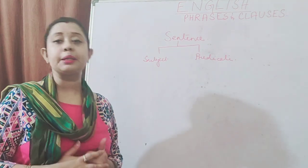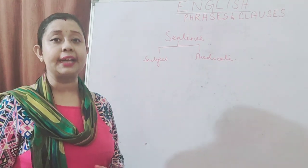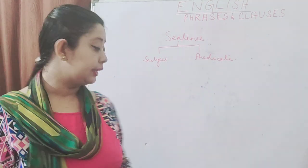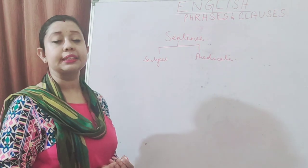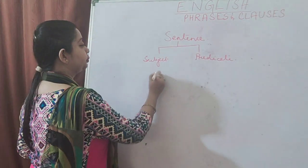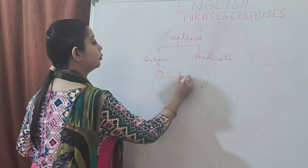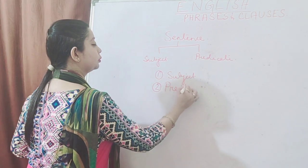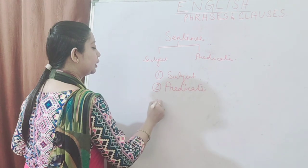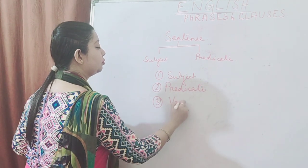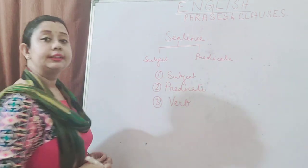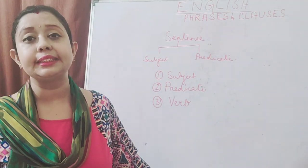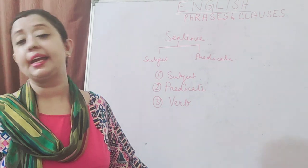Now the next important thing you need to understand is that there are three important things without which you cannot construct a sentence. What are they? Those three important things are: subject, predicate, and the third thing is called the verb. These are the three important things without which we cannot write or speak any sentence.